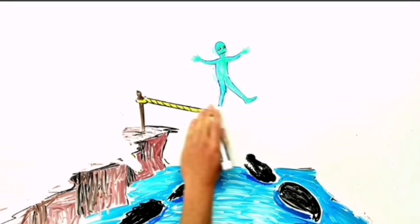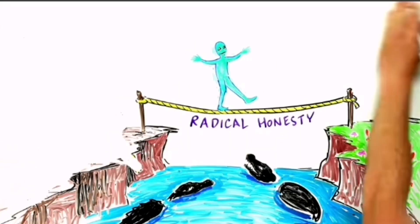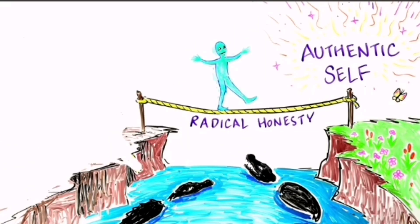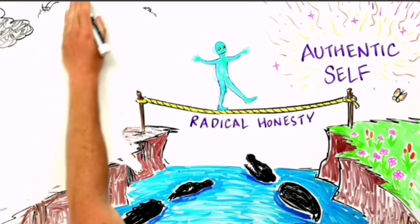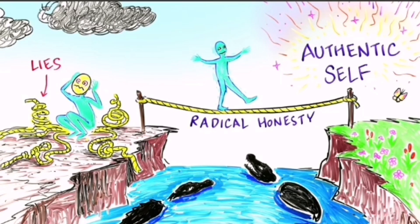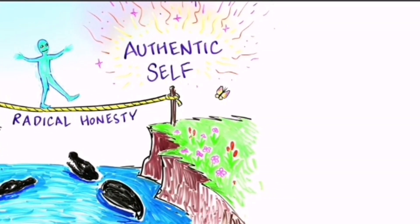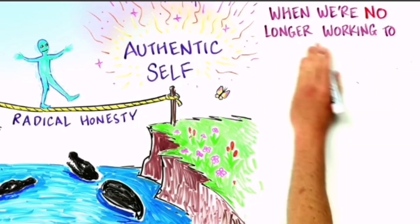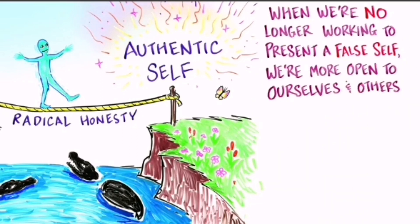The antidote to the false self is the authentic self. Radical honesty is a way to get there. It tethers us to our existence and makes us feel real in the world. It also lessens the cognitive load required to maintain all those lies, freeing up mental energy to live more spontaneously in the moment.